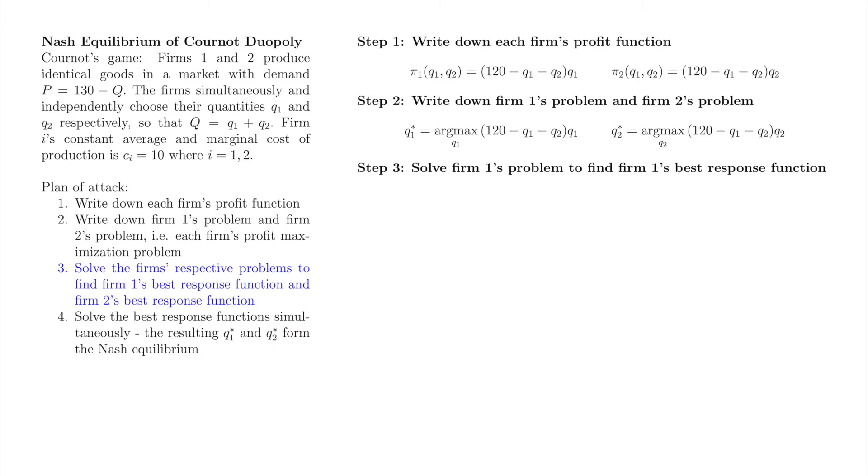Solving firm 1's problem will yield firm 1's best response function, an expression for firm 1's profit maximizing quantity q1 star as a function of firm 2's output q2. One nice thing here is that we only have to find one best response function for each firm. Finding a firm's best response function is the equivalent of doing all of its underlining at once.